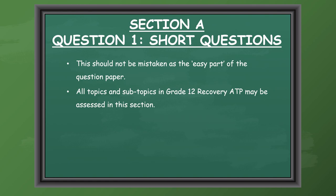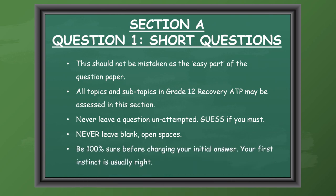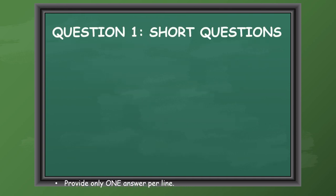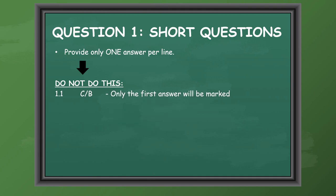Section A will be the short questions and this should not be mistaken as the easy part of the question paper. All topics and subtopics in the Grade 12 Recovery ATP may be assessed in this section. Never leave a question unattempted — guess if you must. Never leave blank open spaces. Be 100% sure before changing your initial answer, as your first instinct is usually the correct one. Provide only one answer per line. Do not write C/B as only the first answer will be marked.